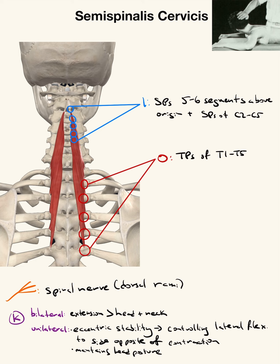Semi-spinalis cervicis is lower than capitis. It originates from the transverse processes of T1 to T5, and inserts into the spinous processes five to six segments above the origin, specifically the spinous processes of C2 to C5.